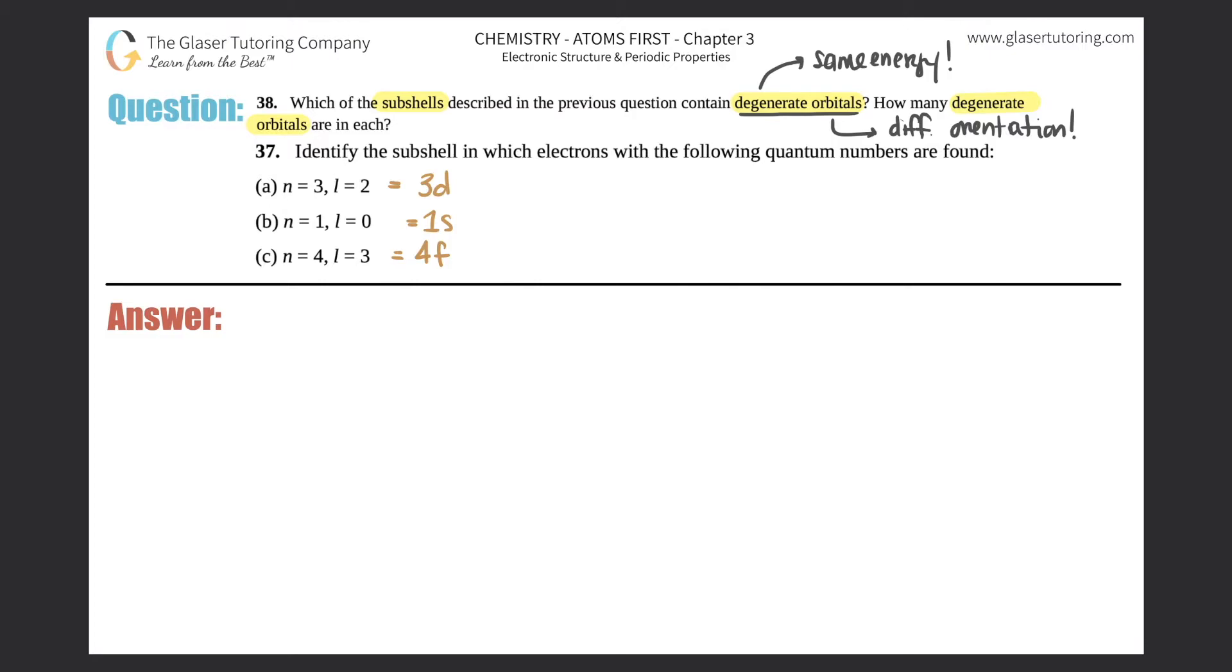Now how are you going to find out these degenerate orbitals? Well, the key is in the word orbital. What quantum number is the orbital value? It's the ml.